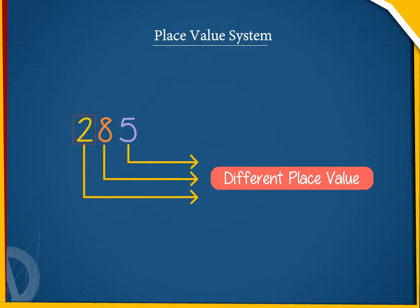The digit at the extreme left, that is 2, is in the hundreds place. It tells us how many sets of 100 are there in the number.